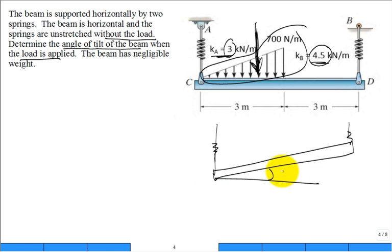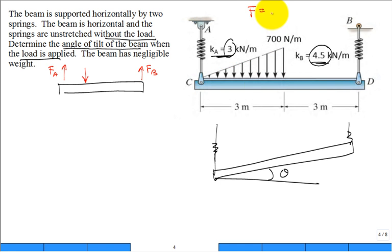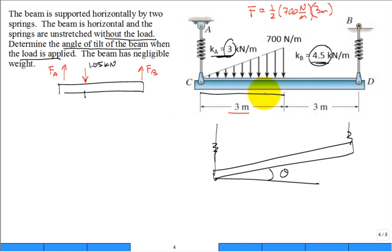So what is this angle theta? You get a free body diagram with the force of the spring at A and the force of the spring at B. The triangular distributed load is replaced by a point load. Because it's a triangular distribution, the magnitude of the point load is one-half times 700 newtons per meter times 3 meters, which comes in at 1.05 kilonewtons, applied at a distance of two-thirds over — that is, at 2 meters.